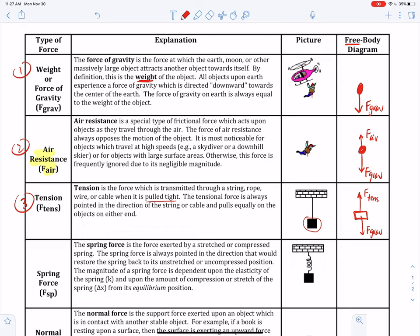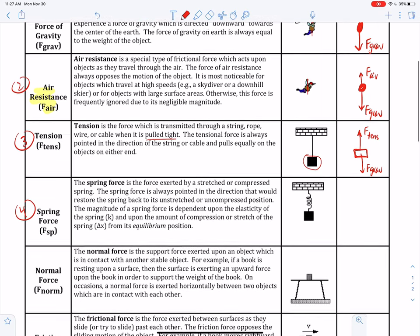But the tension is upwards because the rope is pulling on the box. If it's difficult to identify the direction of the force, sometimes imagine that you are the object. Imagine that you are the box and that you've got like a rope attached to the top of your head. You would feel pulled upwards by the rope. Let's keep going. Number four, spring force.